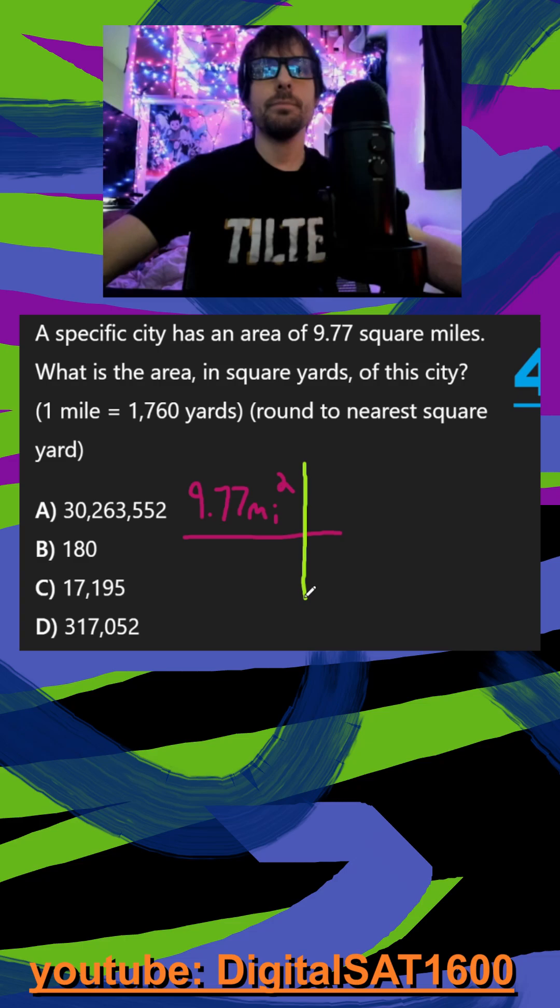So diagonally, I will always do similar units. So I'll say in one mile, we have 1760 yards.